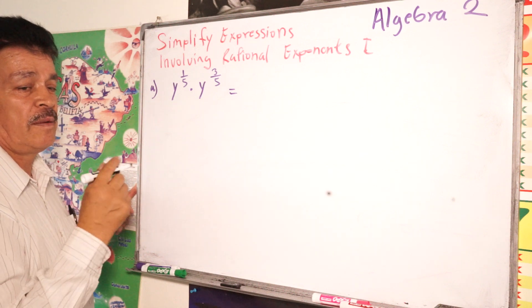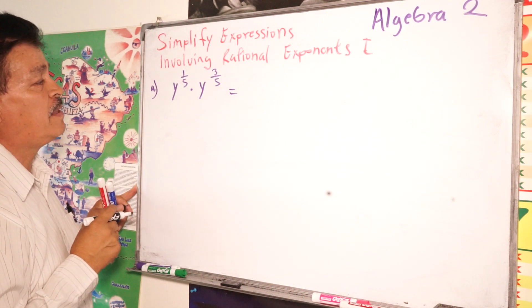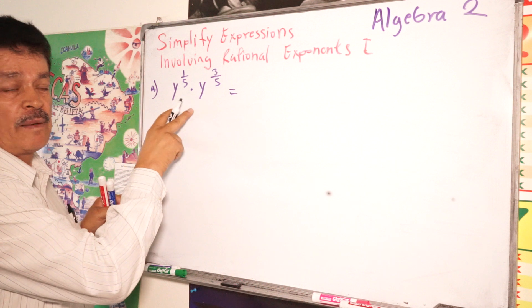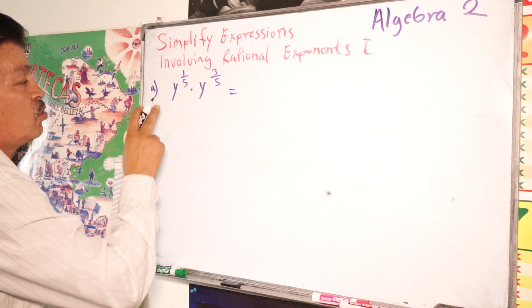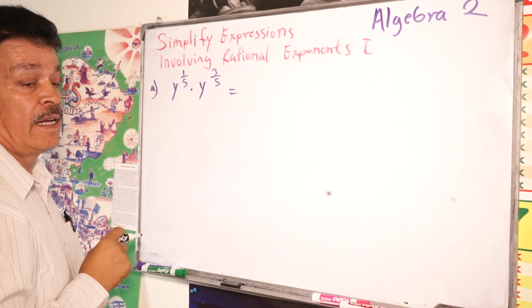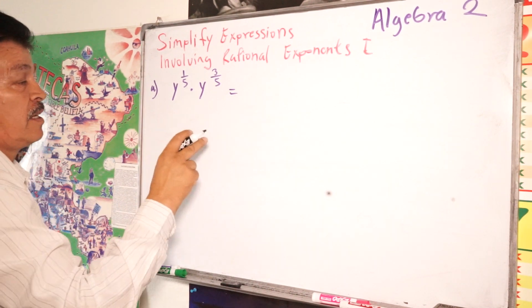So this expression, this expression is in the product. Have the same base. In this case, the base is Y. So to multiply them, to multiply them, we have to add it, add the exponent, okay?